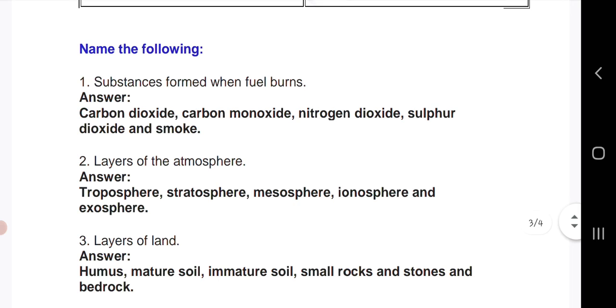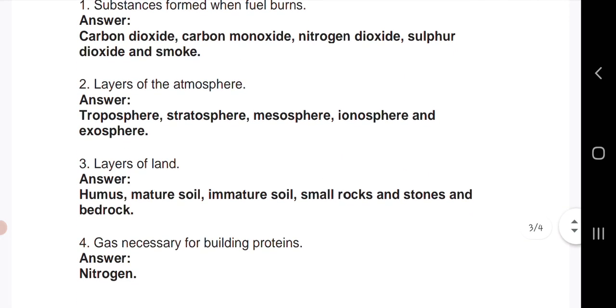Name the following. First one: substances formed when fuel burns. Answer is carbon dioxide, carbon monoxide, nitrogen dioxide, sulfur dioxide and smoke. Second question: layers of the atmosphere. Troposphere, stratosphere, mesosphere, ionosphere and exosphere.